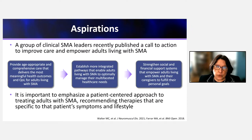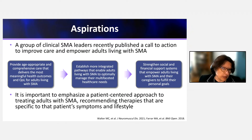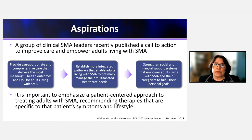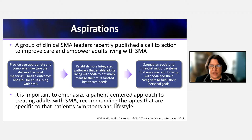A group of SMA experts recently published a call to action to improve care and empower adults with SMA. Key aspirations include: age-appropriate and comprehensive care delivering the most meaningful health outcomes and quality of life; greater study of quality-of-life measures and better understanding of optimal instruments to gauge clinically meaningful response — emphasizing stability as an acceptable outcome; and establishing more integrated care pathways to help adults with SMA optimally manage their multi-faceted health needs.